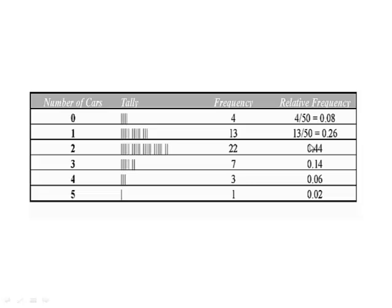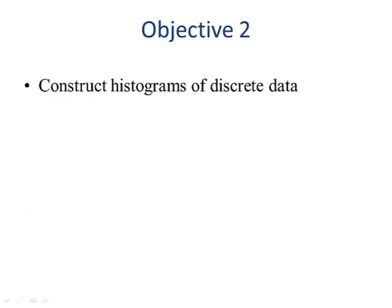This happens the most often. 22 divided by 50 is 44%. So very quickly we take what's called the raw data and we can summarize it in a table, either a frequency or a relative frequency.